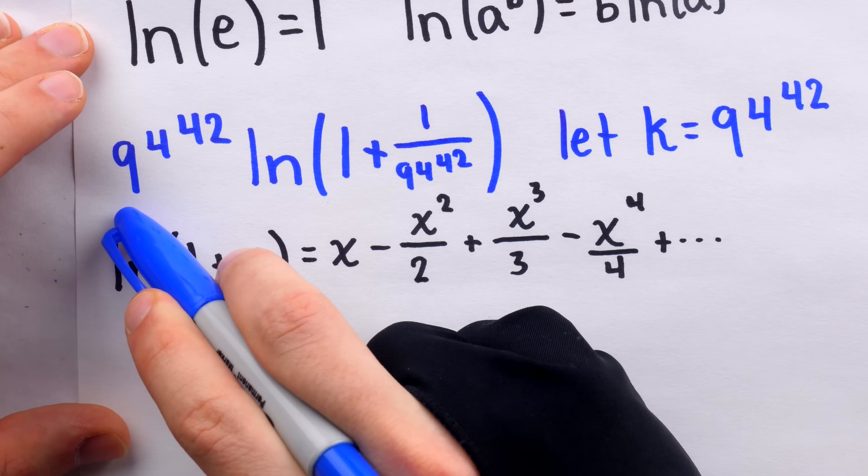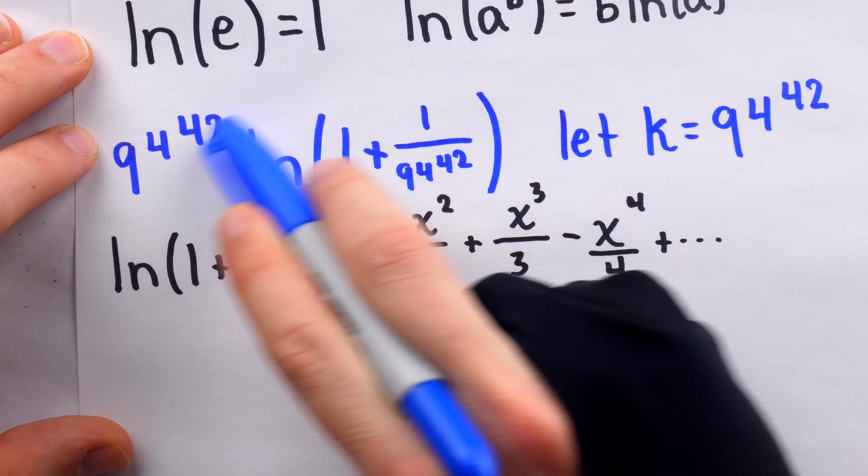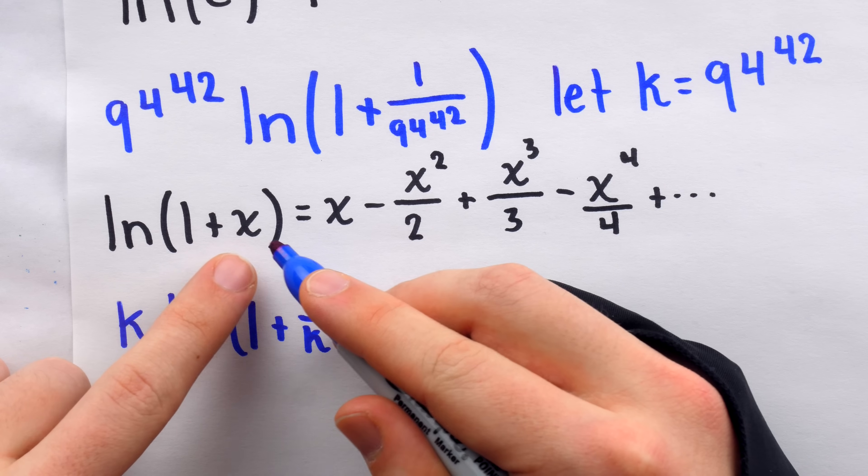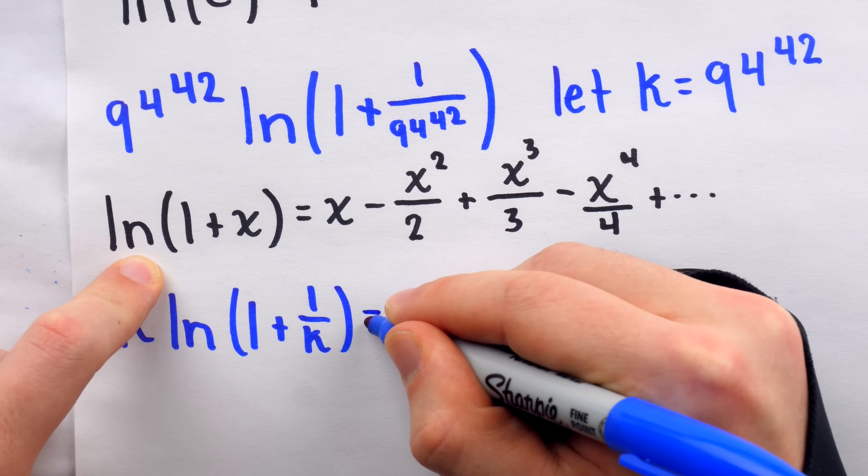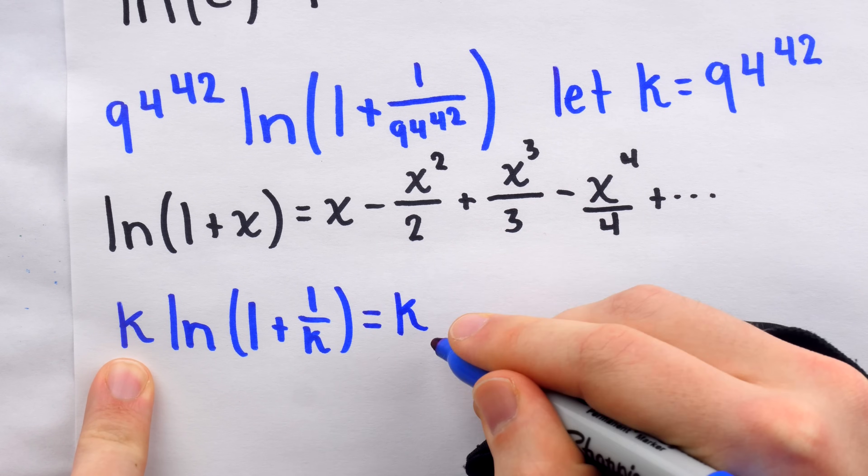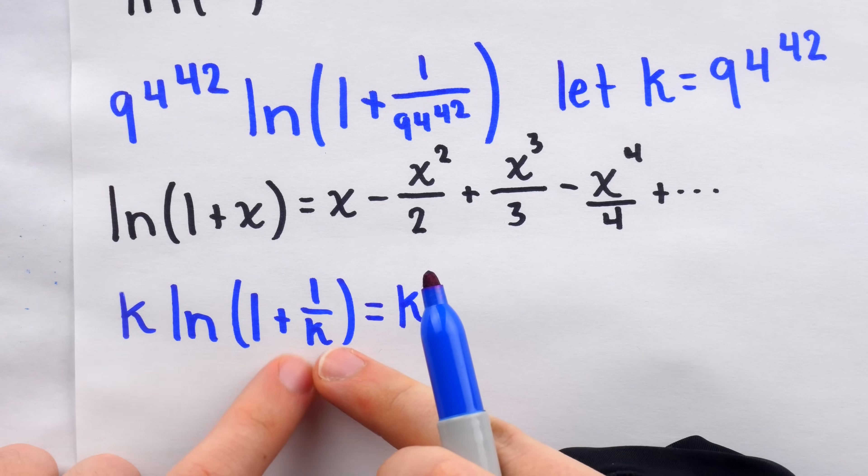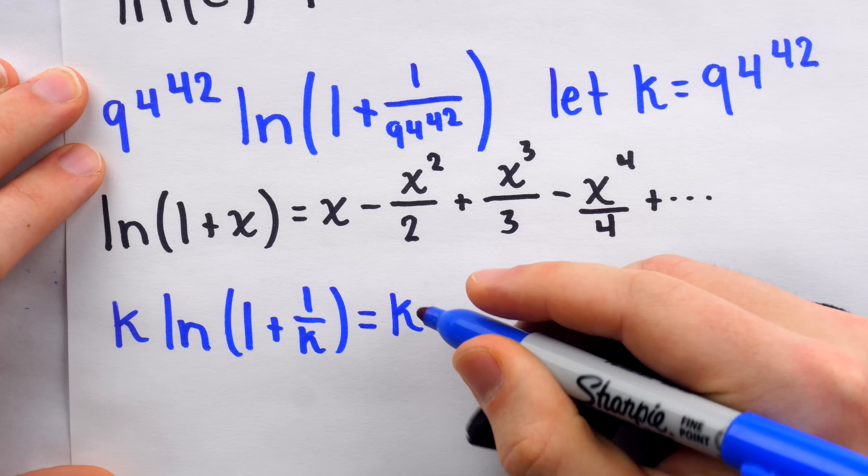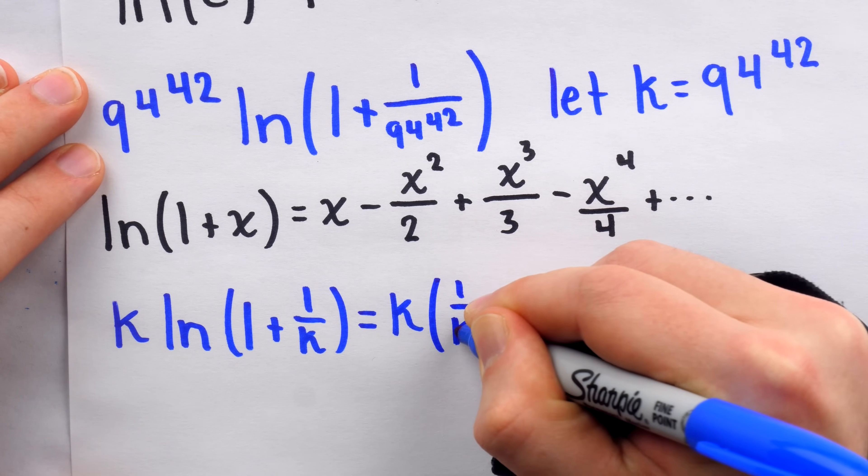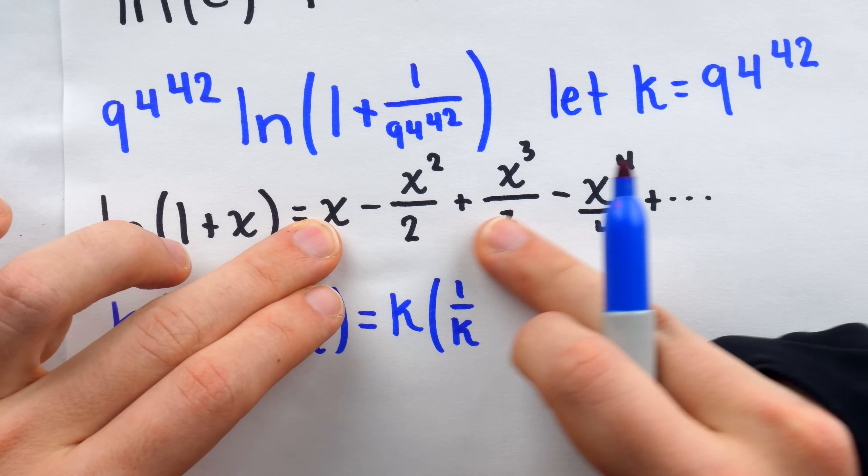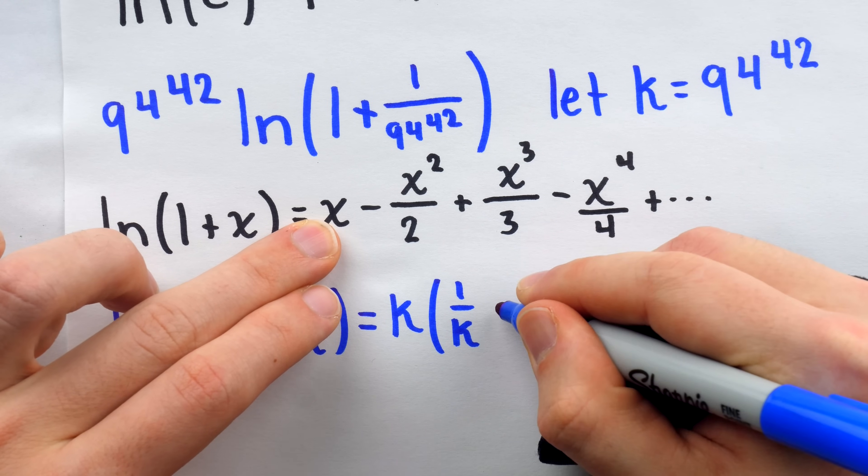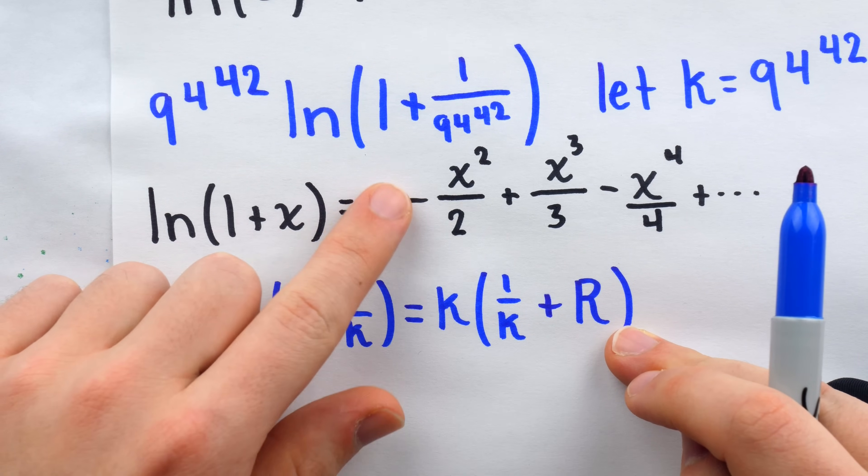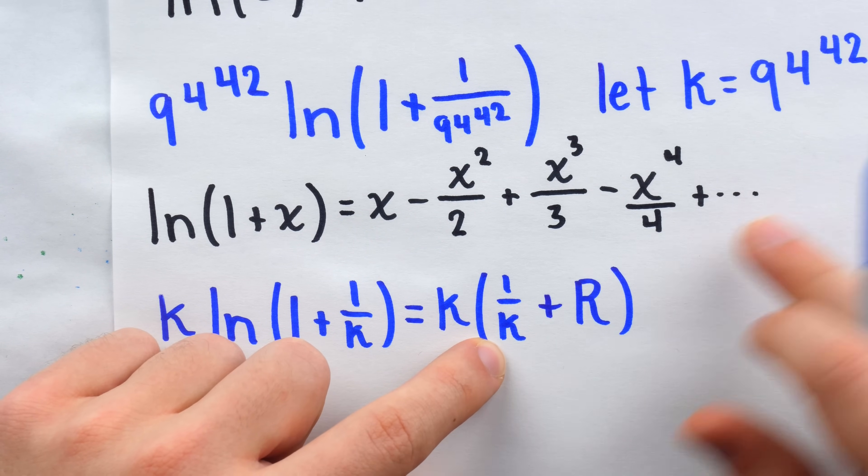Now, how do we use the power series to show that this expression is close to 1? Well, what we have with this expression is this number that we're calling K multiplied by the natural log of 1 plus 1 over K. And we know from the power series for the natural log of 1 plus x that this is equal to K, that factor of K, multiplied by the power series for the natural log of 1 plus x with 1 over K plugged in for x. Now, in this power series, the first term x would just be that 1 over K. So this would be multiplied by 1 over K. If we imagine stopping right there at the first term, we might call the rest of the series the remainder. So we'll wrap that all up into a single letter. We'll call that R.